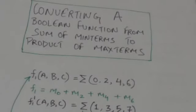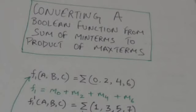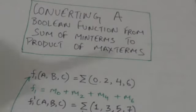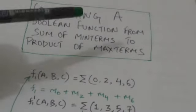Hello friends, welcome back to the tutorial. In this tutorial we will learn how we can convert a Boolean function from sum of minterms to product of maxterms form. There is a direct way to convert a Boolean function from sum of minterms to product of maxterms form. Suppose there is a function f1 of three variables a, b, and c.